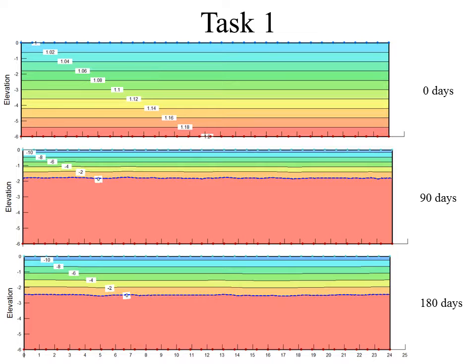As we can see, the frost depth after 90 days was approximately 1.8 meters. And then for 180 days, the frost depth penetrated down to 2.4 meters.